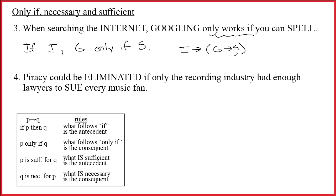Sometimes people ask if this is supposed to be equivalent to (I∧G)→S, and the answer is yes — that is also a correct answer. Notice if you try to read this in English it's going to sound terrible. It looks like it says 'if you're searching the internet and Googling works, then you can spell.' It's not immediately clear that that means the same thing as the first sentence. As I keep saying, you have bad intuitions about only if.